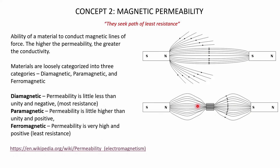The second concept — and actually the most important one — is magnetic permeability. Permeability is the ability of a medium to conduct magnetic field lines through it. If the permeability is higher, the medium conducts more. As I mentioned, magnetic field lines seek the path of least resistance. As you can see in the diagram, as soon as you introduce iron, the magnetic field lines immediately reorient themselves and pass through the iron core, because iron has much higher permeability. All materials are loosely categorized into three categories: diamagnetic, paramagnetic, and ferromagnetic.